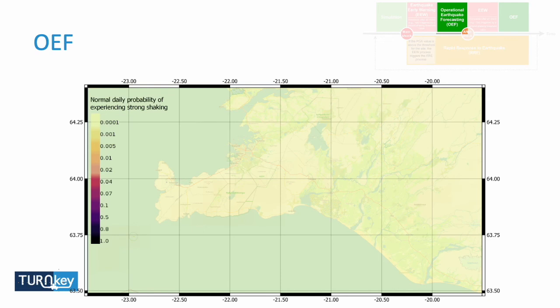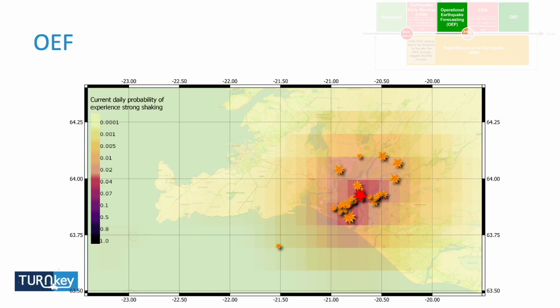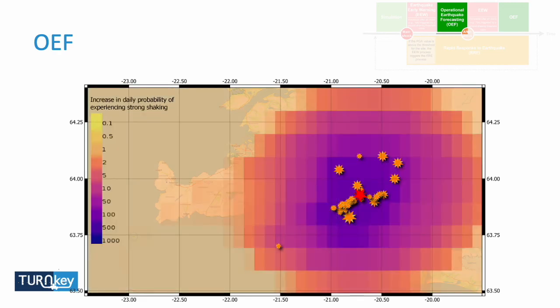Then another engine is activated: operational earthquake forecasting. As more events come in, this shows the number of aftershocks accumulated and collected by the engine. The engine uses this information in combination with the static hazard map — which is the map that already existed before the event — to start generating outputs.